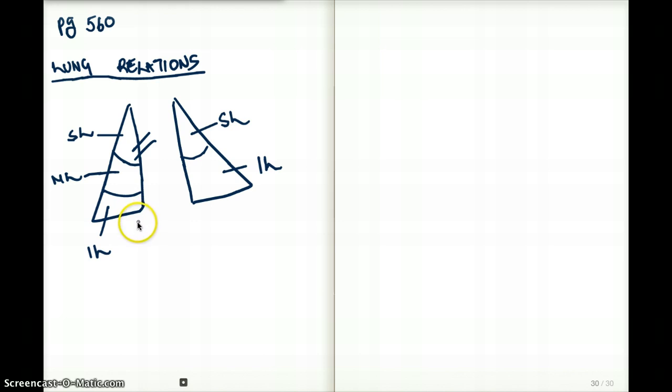Aspiration can happen in two different positions. One is sitting upright, and the other is lying down. So if it's sitting upright, then where will the aspirate go? They both go to the inferior lobe.